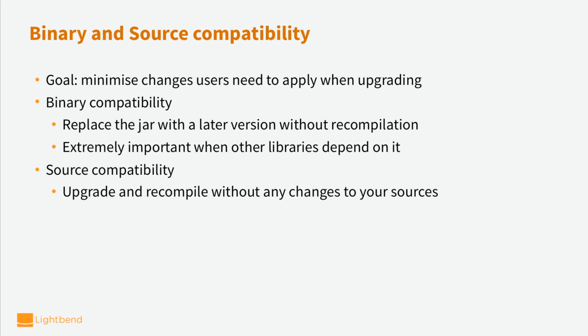Binary and source compatibility are important properties which we want to establish for Alpaca, as we have been doing for Akka for quite a while. The goal is to minimize changes users need to apply when upgrading versions. Binary compatibility gives you the chance to replace a jar with a later version without recompilation of your project — you can just drop in a new jar and everything is supposed to work. This is extremely important when you have libraries that depend on that binary code. Source compatibility, on the other hand, gives you the chance to upgrade without needing any source changes. Binary compatibility is more important to us than source compatibility, but we strive for both.